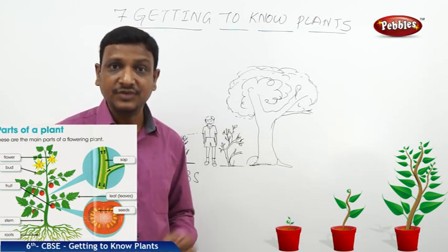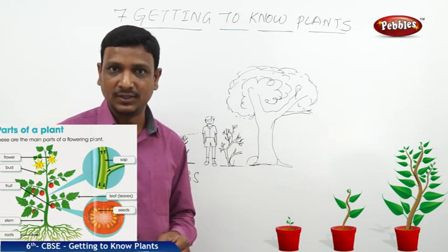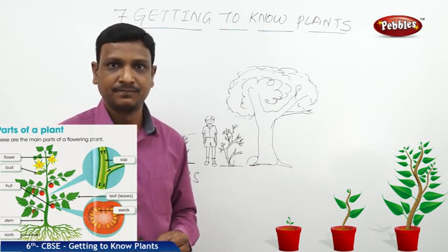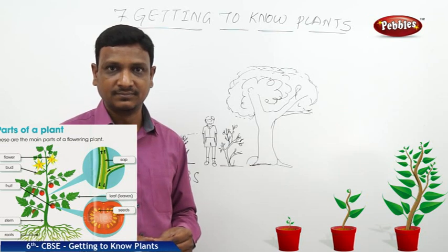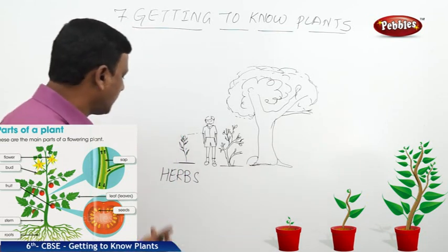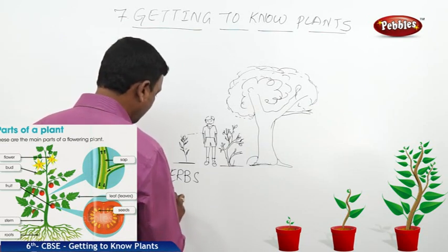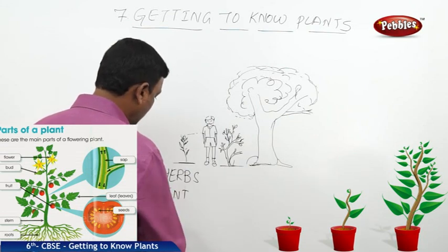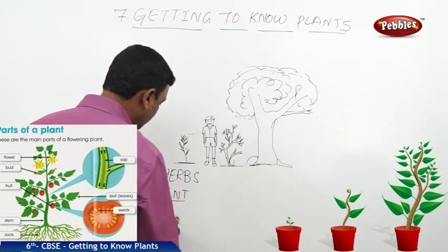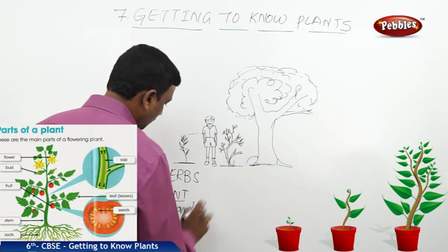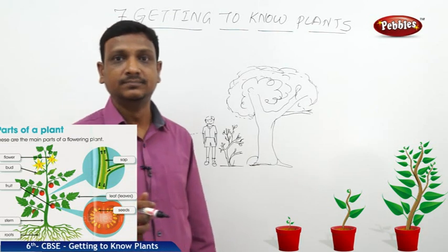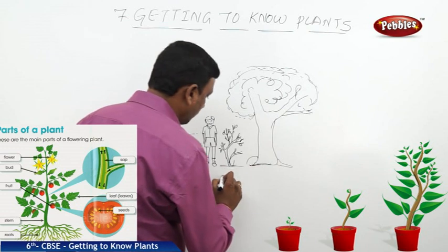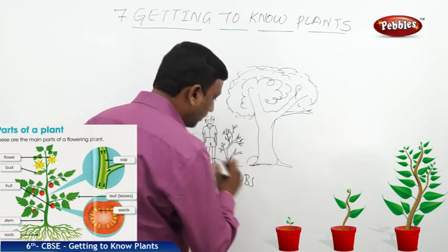We find such herbs in the garden and all around — very small plants in open grounds which have very tender stems. Sometimes they cannot even resist the wind; even wind may cause them to break. Examples of herbs include mint and coriander, which are small herbs.